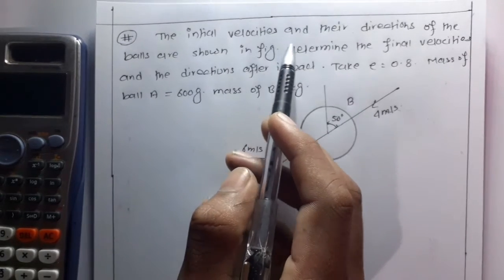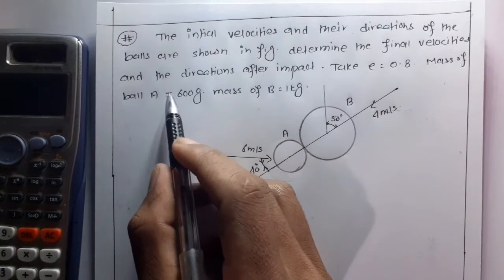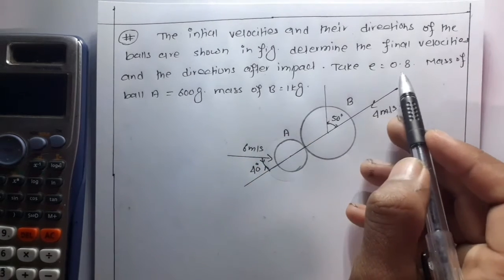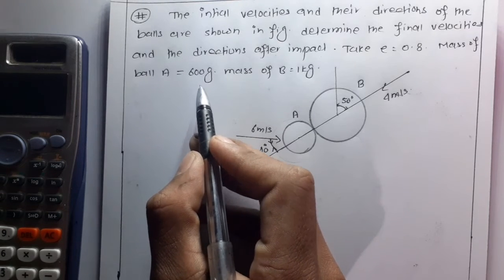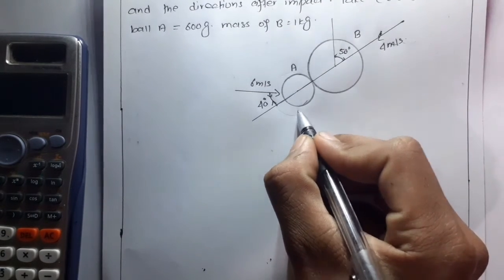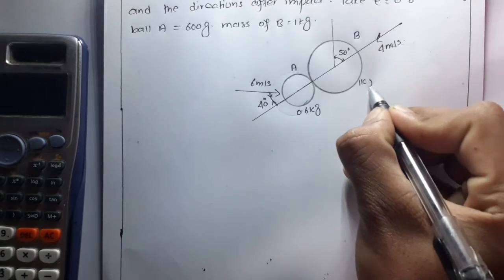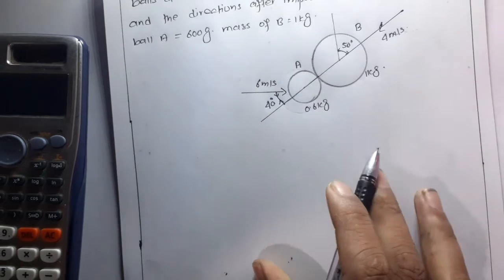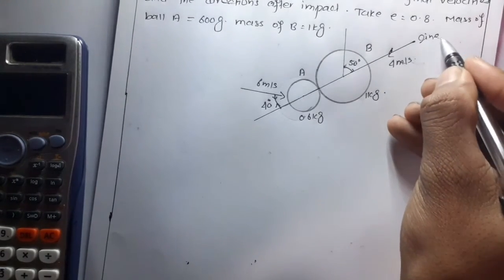The initial velocities and their directions of the balls are shown in the figure. Determine the final velocities and direction after impact. The coefficient of restitution e is equal to 0.8, mass of ball A is 600 grams (0.6 kg), and mass of ball B is 1 kg. From the figure, velocity of A is 6 meters per second making 40 degrees with the line of impact, and this is the line of impact.